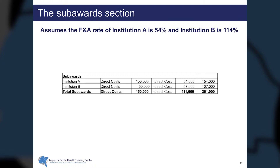In the sub-awards section, you capture the list of institutions, their direct cost budget, and their indirect costs for the project. In this example, the facilities and administrative rate for Institution A is 54% and for Institution B it's 114%. Remember that in calculating indirect costs for your institution, you include only the first $25,000 of direct costs for each sub-award. In this situation, we have total sub-awards of $261,000.